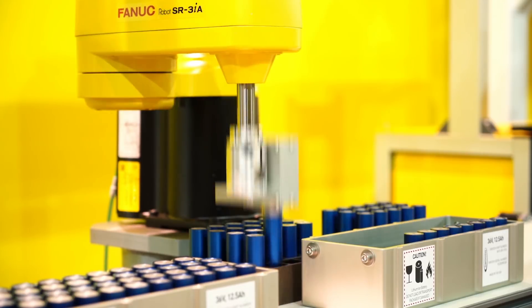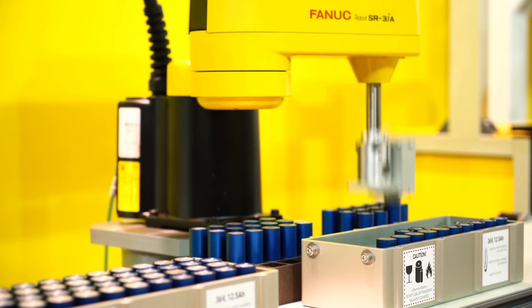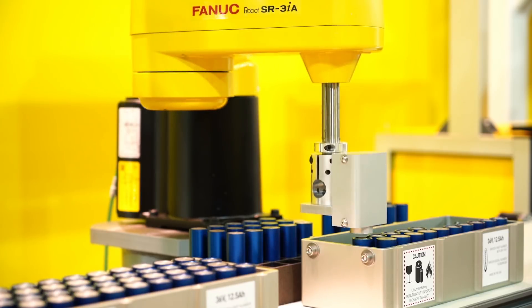Once one module is complete, the conveyor moves down and the robot completes the same assembly process on a second module.